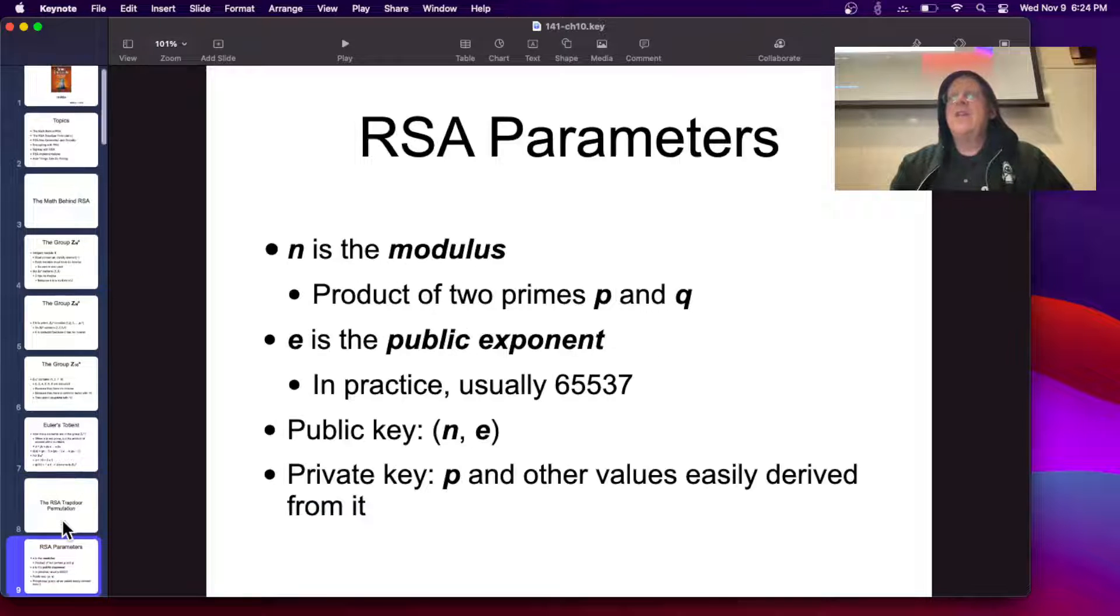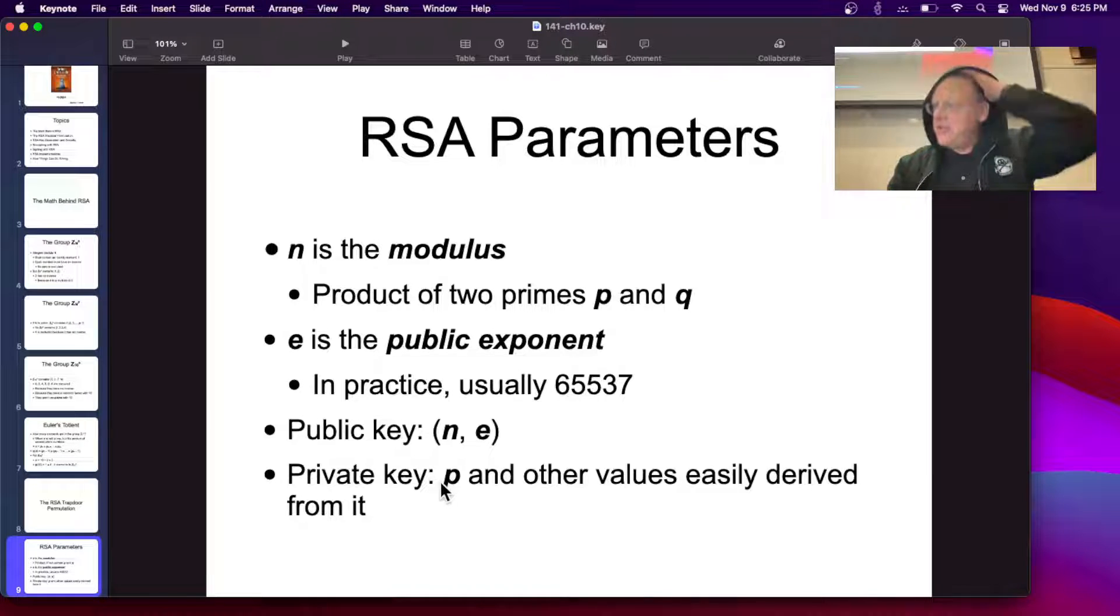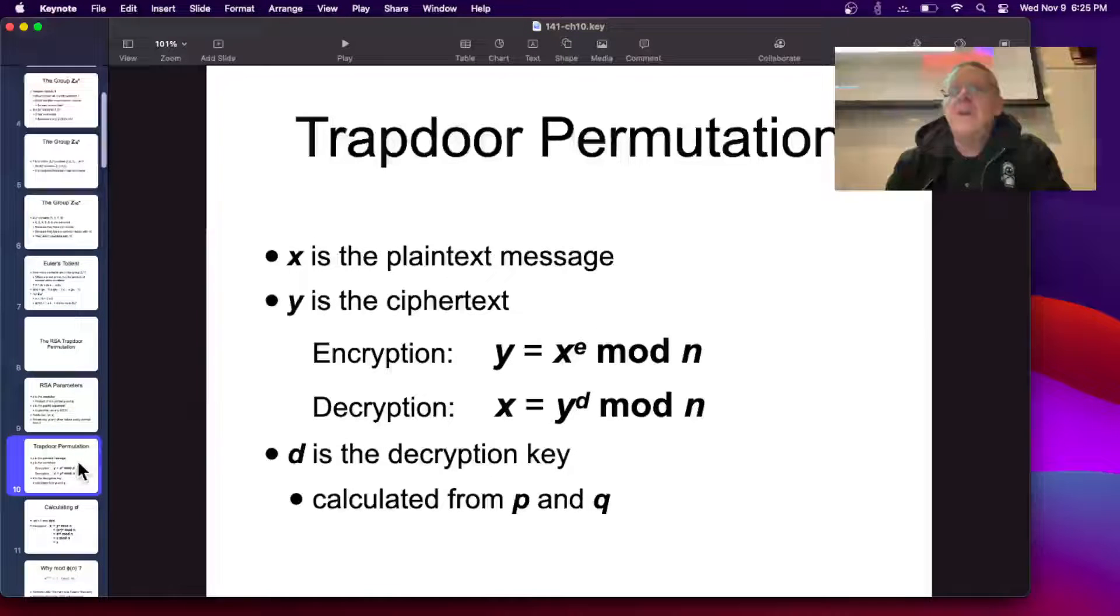So here's the RSA, trapdoor permutation. You have a modulus N, which is the product of two primes, P and Q. You pick a public exponent, which in practice you usually just use this number. And that's the public key, is N and E. That's all you tell the public. In private, you know the prime number it was built from. That's P. And if you know P, you can find Q by taking N over P, and you can find various other values from it, and that's including the value you need to decrypt messages.